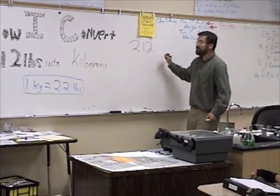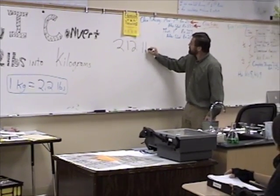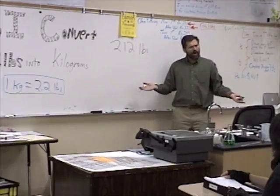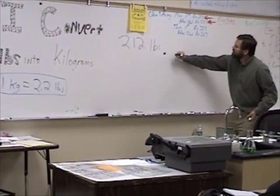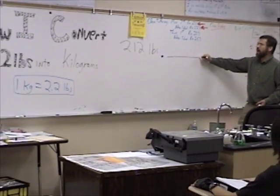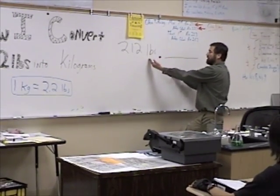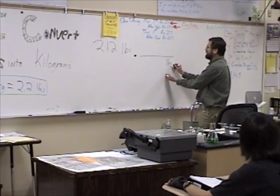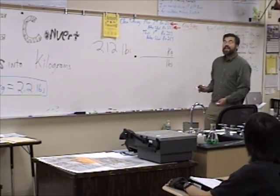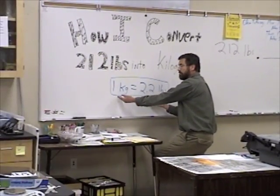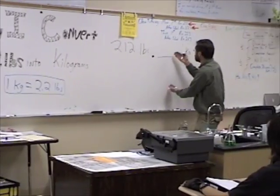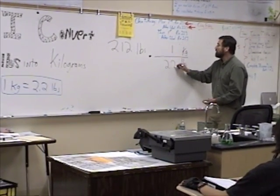First of all, I write the given, and I simply have to write the units. Got to write the units, because the units are so cute. Then a tiny dot means multiply. The conversion factor starts with a horizontal line. And then to the bottom, the units I will cancel. And then to the top, I write the units I will move to. Then I write the numerals that make the top and bottom equal.